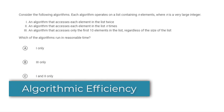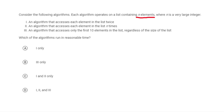In this problem, we have a list with n elements — n is a very large integer — and three different algorithms are proposed. Algorithm one accesses each element in the list twice, so the total runtime is 2n. Note that 2n is still considered linear; unlike n-squared which is quadratic, any constant times n is just linear. The eventual question is which of these run in reasonable time, and since linear time is polynomial, this one certainly does.